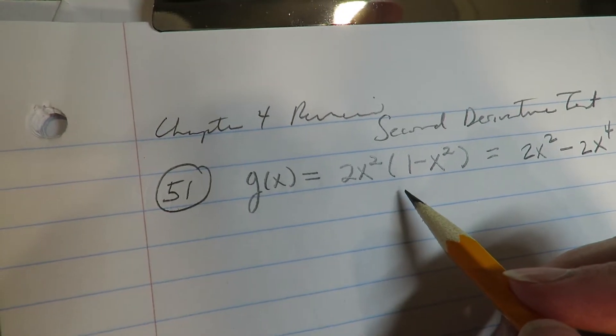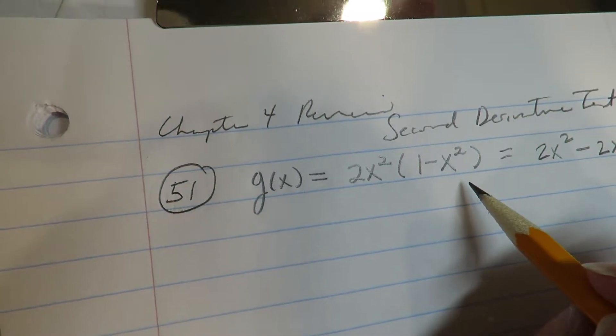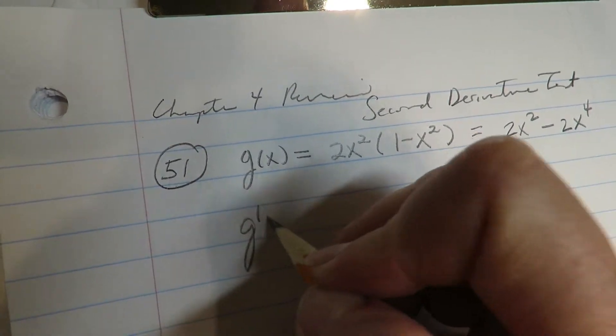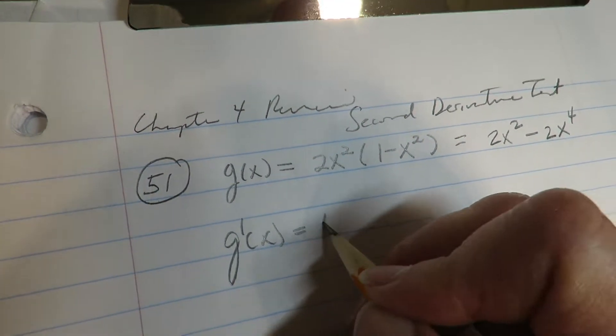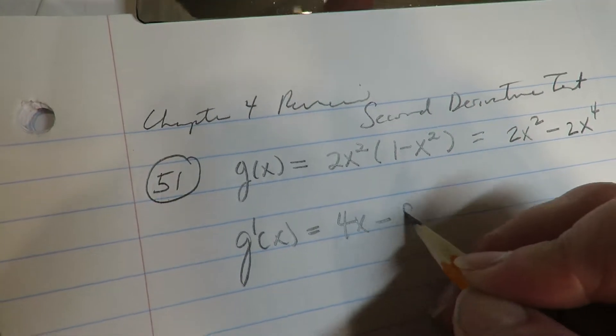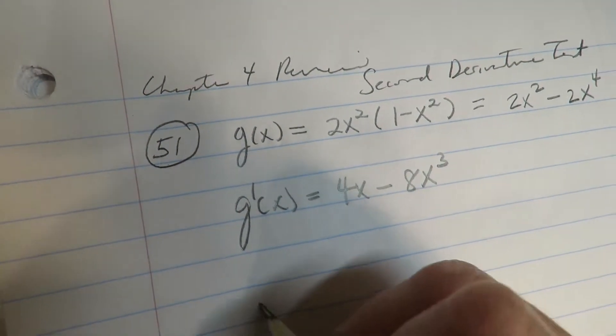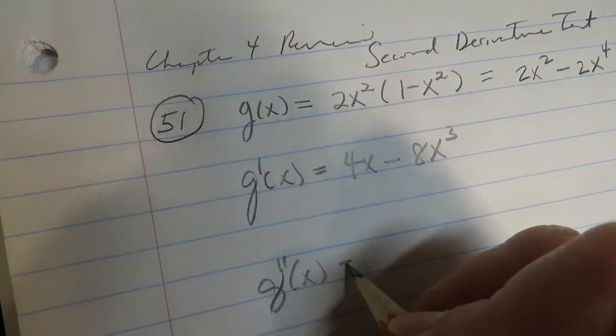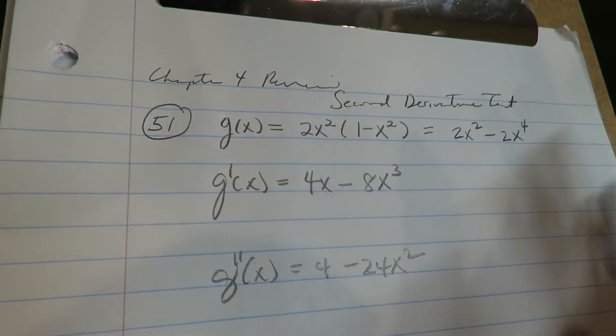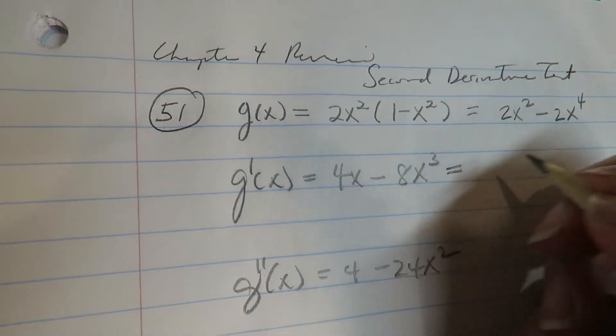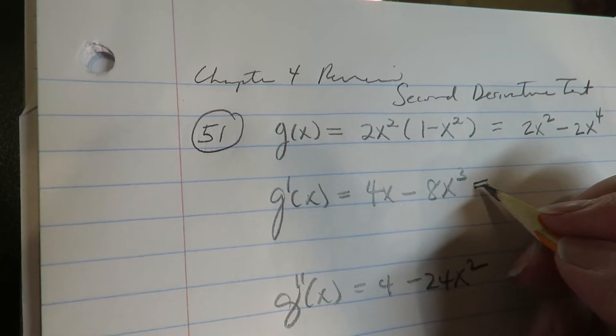and distribute this in because it's very easy to get to the second derivative. 4x minus 8x³. Then 4 minus 24x². Yeah, that's just way easier to do if we just simplify that. All right, now